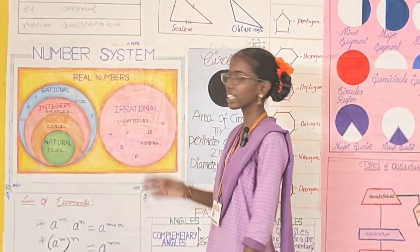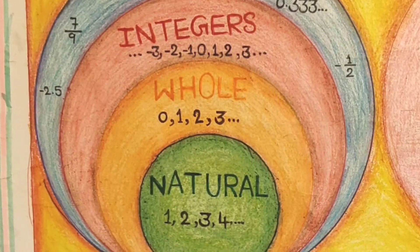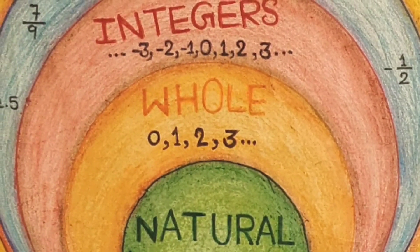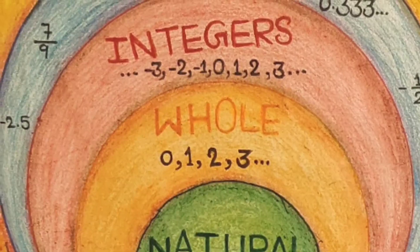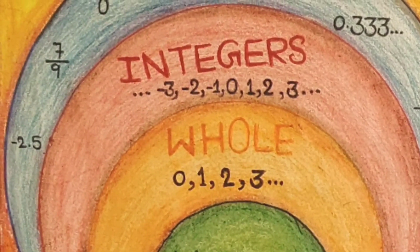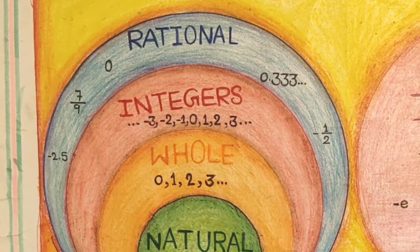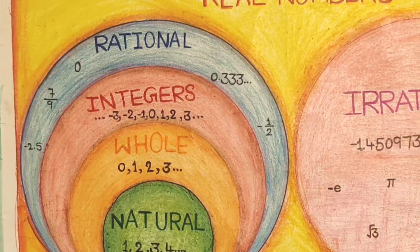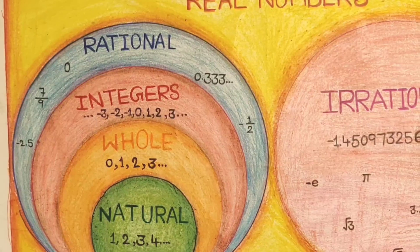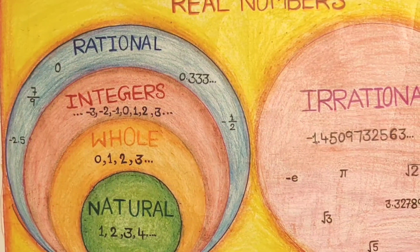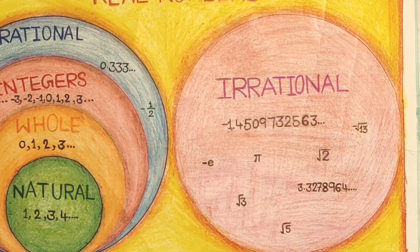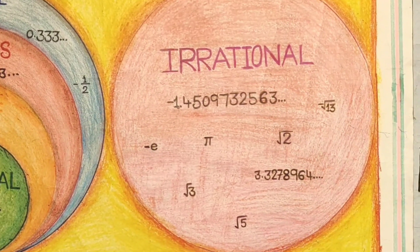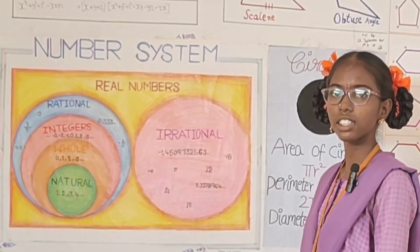This is number system. In this system: natural numbers, denoted by letter N: 1, 2, 3, and so on. Whole numbers, denoted by W: 0, 1, 2, 3, and so on. Integers, denoted by letter Z: 0, 1, 2, 3, and so on, minus 1, minus 2, minus 3, and so on. Rational numbers, denoted by letter Q: 0, 7 by 9, 0.333, etc. Irrational numbers, denoted by letter P: pi, root 2, root 5, etc. Rational numbers including irrational numbers are real numbers.